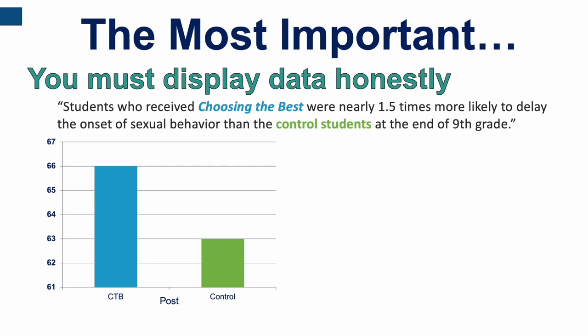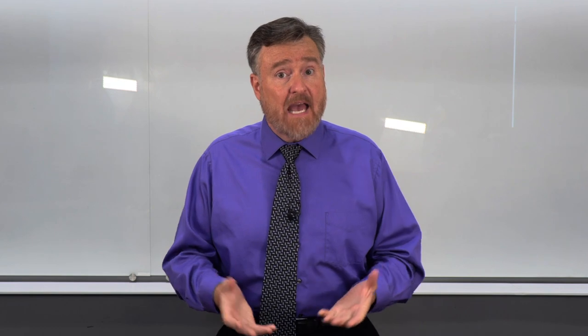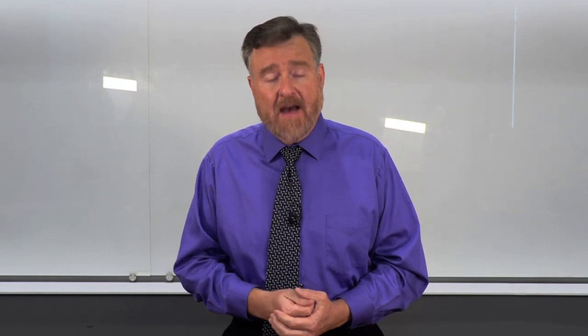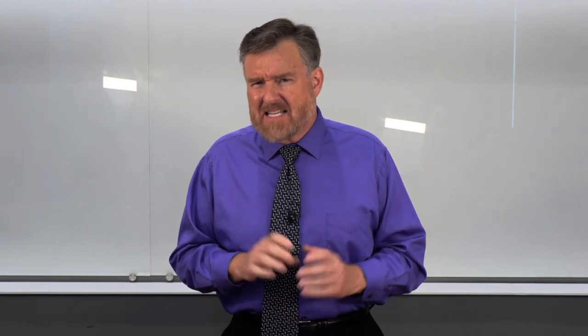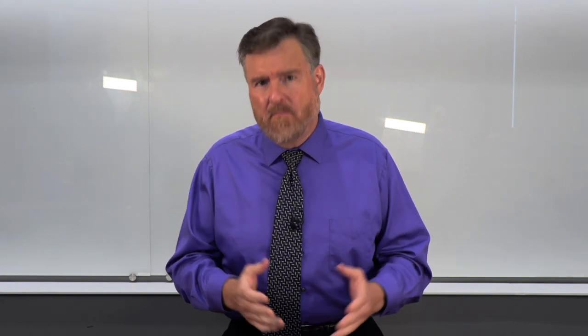The graph you see here is not the original graph, but I recreated it using the original so that it appears exactly as it did in the literature, with the exception of colors I've added for clarity. What we see is that the blue bar representing the outcome for Choosing the Best is indeed much taller than the green bar representing the control students, which would indicate that the program is very effective. However, looking at this graph, I see some things that could be done better — let me point out what I think might be some flaws.